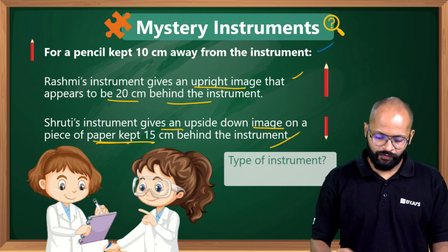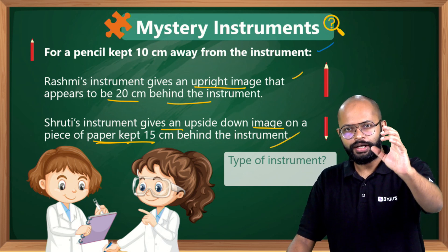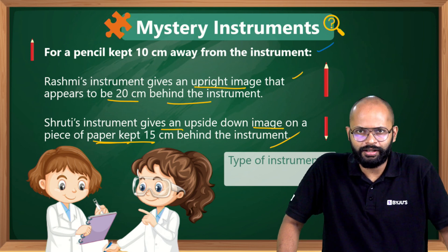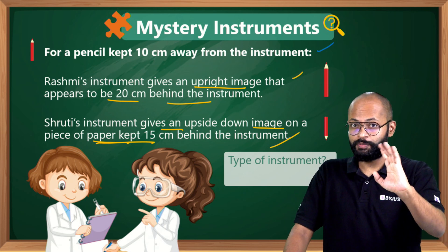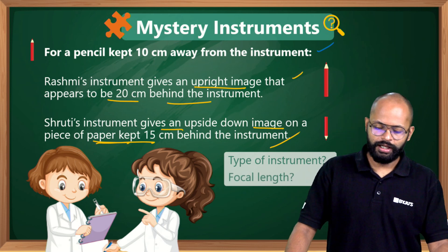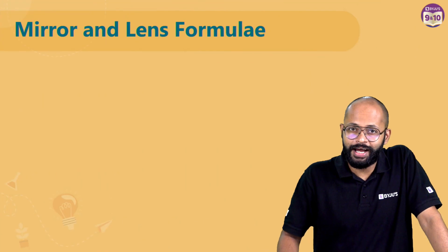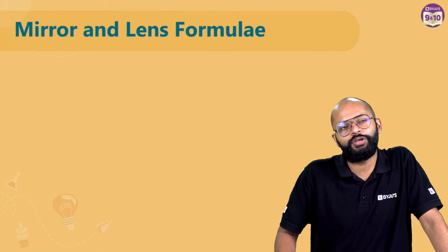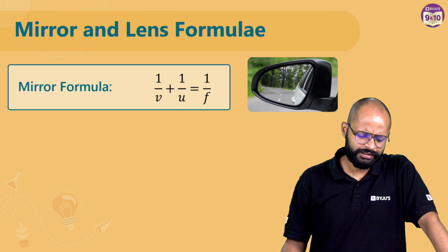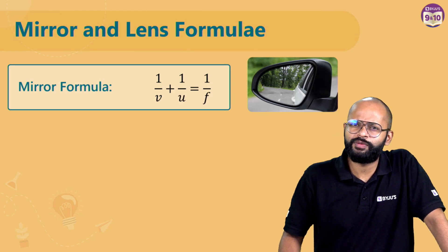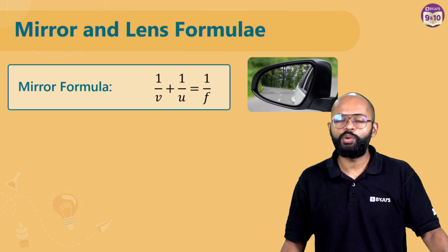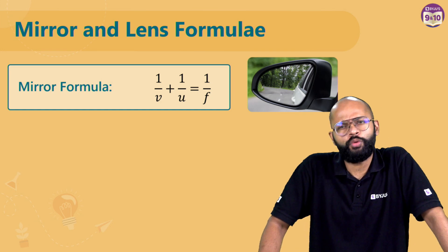The question in front of us is: given the observations made by Rashmi and Shruti, what type of instrument has each been using? To figure this out, we need a good grasp of the mirror and lens formulas. Mirror formula: 1/v + 1/u = 1/f, where v is the image distance from the pole of the mirror, u is the object distance from the pole, and f is the focal length.